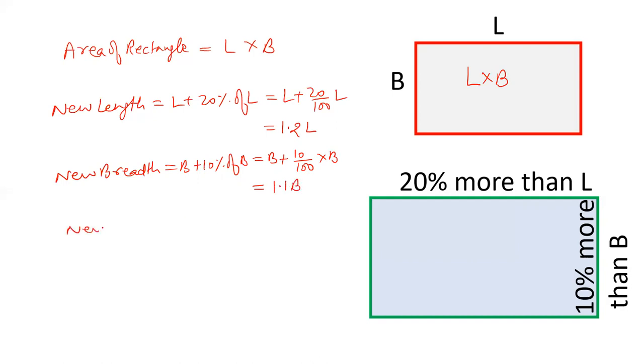So let's see what is new area. 1.2 L into 1.1 B and that will be equal to 1.32 into L into B.